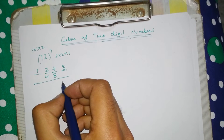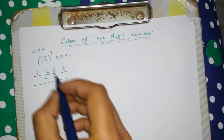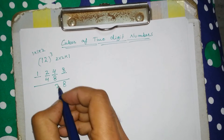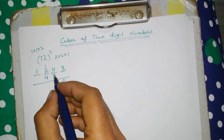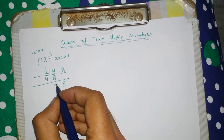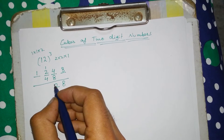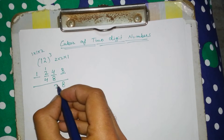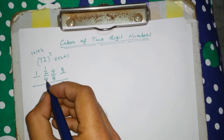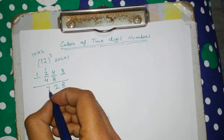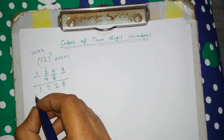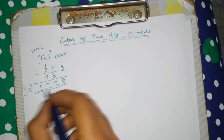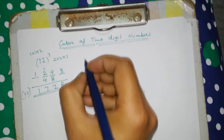Now add these digits and that will be your cube of 12. Starting from the right: 8. Then 8 plus 4 is 12, write 2 and carry 1. Again 8 plus 4 is 12, write 2 and carry 1. Then 4 plus 2 is 6, plus 1 is 7, and 1. The cube of 12 is 1728.